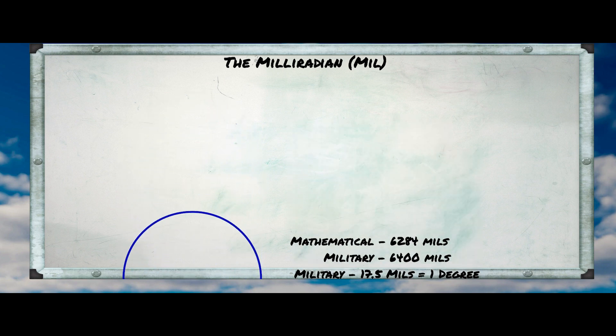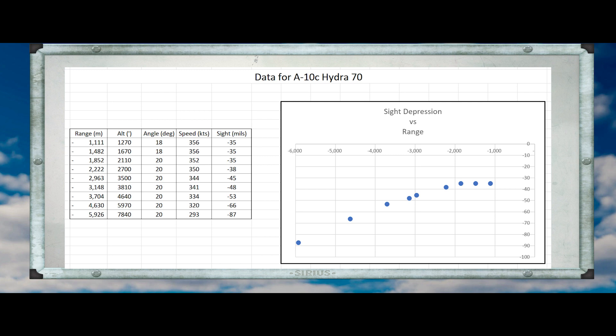So with all of that in hand, here are the results we get from the A-10C video. I'm not really interested in the numbers themselves — the CCIP computer handles that for us. But look at the curve: it does exactly what we expected it to do. In this region, the site depression depends on range, linearly, which is in itself interesting but not something we're going to pursue here.